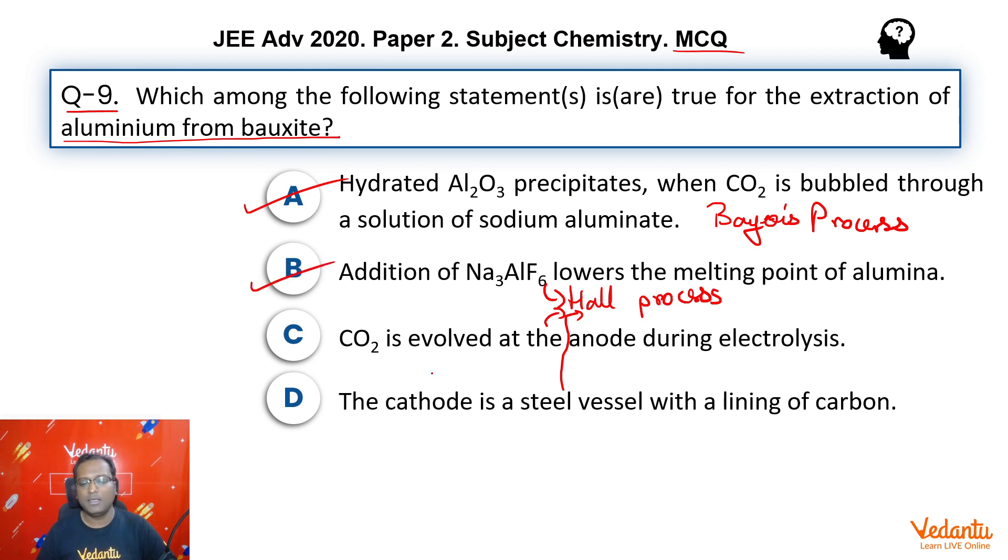CO2 is evolved at the anode during electrolysis process - correct. And we know that in this process the cathode is made of steel lined with carbon - that's a fact, so this is also correct.